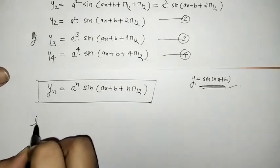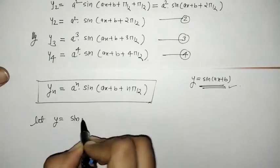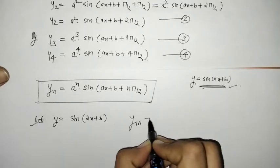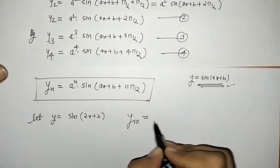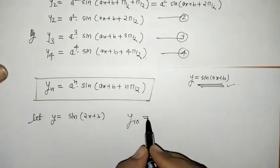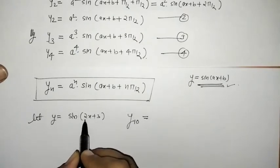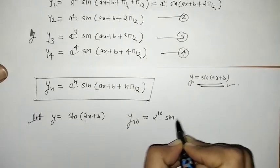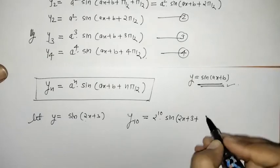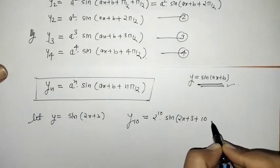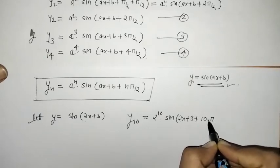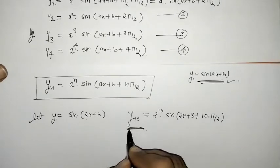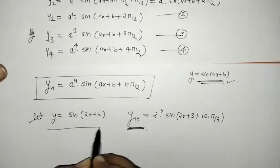For example, if y = sin(2x + 3), its 10th derivative is given by the formula: here a = 2, so y10 = 2¹⁰·sin(2x + 3 + 10π/2). This is the 10th derivative of y.